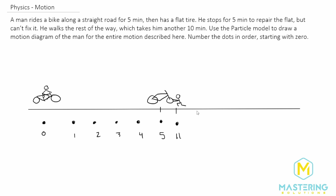Now he's going to be walking at the same speed, so we'll have eleven, twelve, thirteen, fourteen, fifteen, sixteen, seventeen, eighteen, nineteen, and twenty.